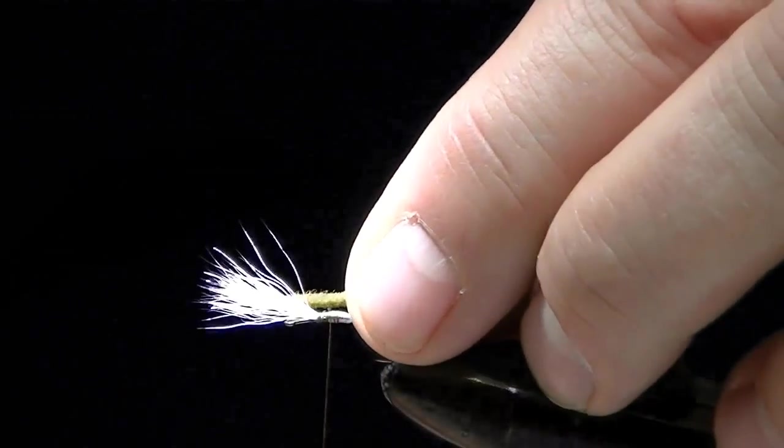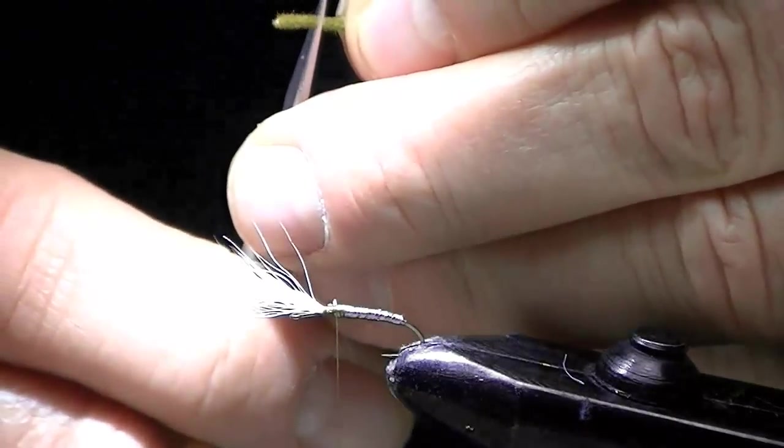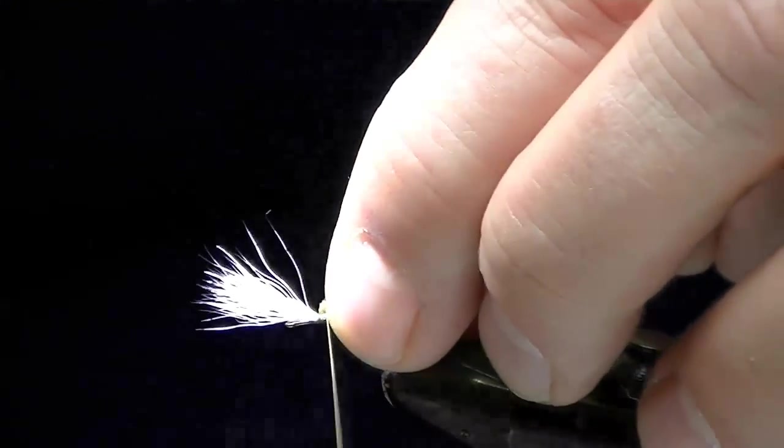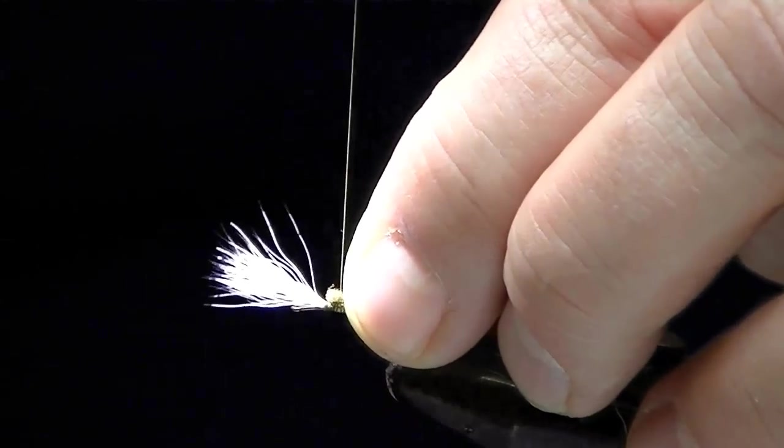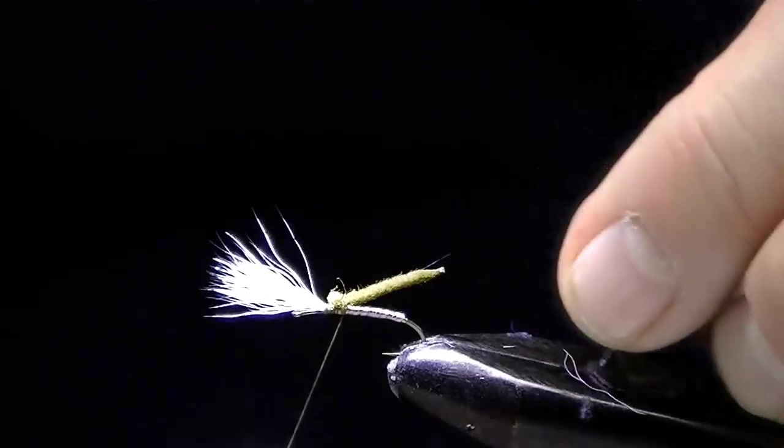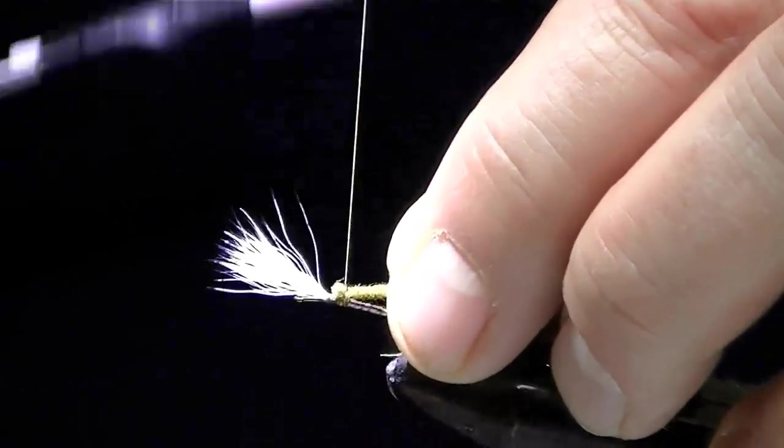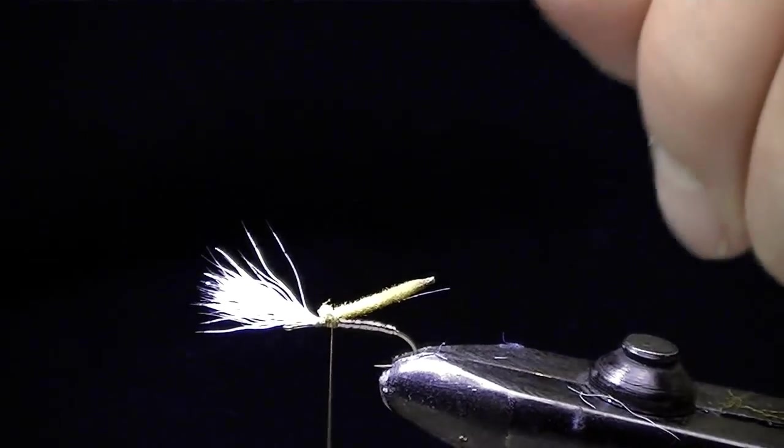So I'm going to have that extend just beyond the bend of the hook. Right there. Four wraps. It's on.